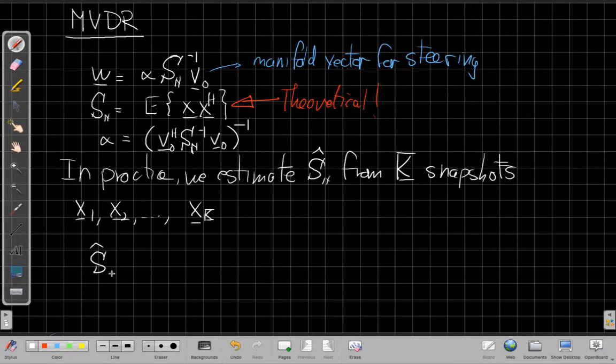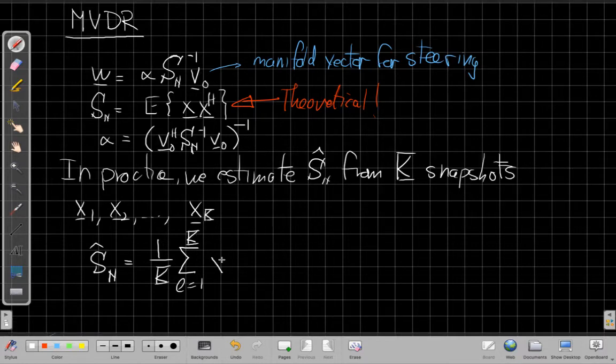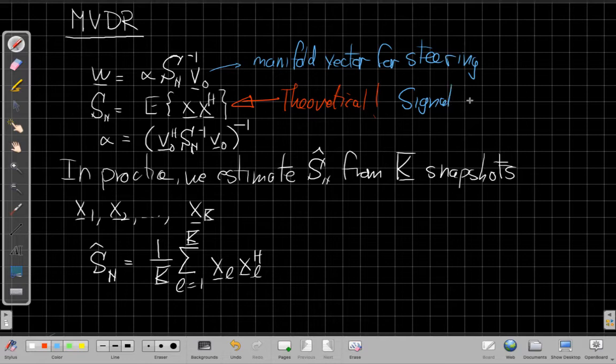Just to write that out clearly, this is what we call the sample covariance matrix. S hat of N will be 1 over K times the sum, little l to keep it clear from wave number, from 1 to total number of snapshots, X of L times its outer product. So the same function, I'm just averaging the function here that I wish I had but I don't. This is theoretical and I should have reminded us, this is for MVDR, this is the signal absent version.